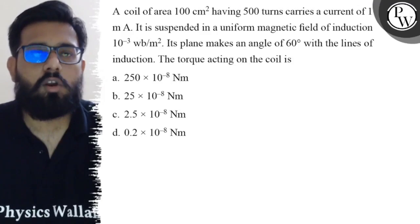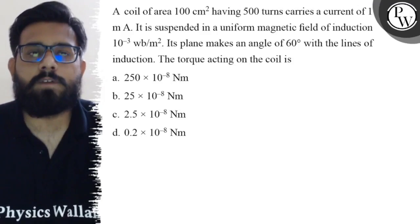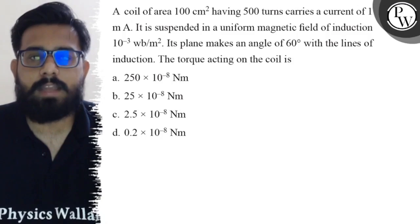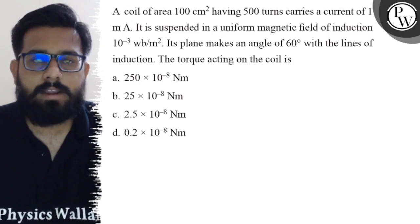Hello Bacho, so let's see the question. A coil of area 100 cm² having 500 turns carries a current of 1 mA. It is suspended in a uniform magnetic field of induction 10^-3 Weber per meter squared. Its plane makes an angle of 60 degrees with the line of induction.